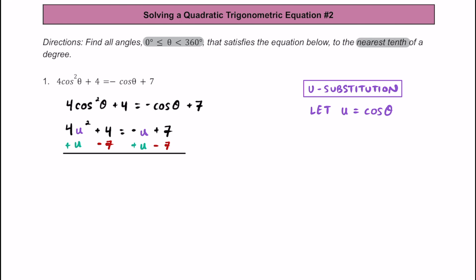Rewriting this equation, we're going to have four multiplied by u squared, plus u on the left side as well. Then four minus seven is negative three, so we write minus three, and that's going to be equal to zero.